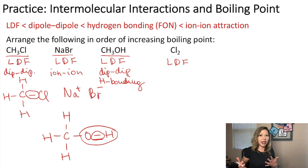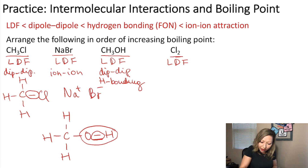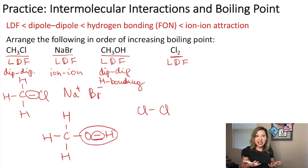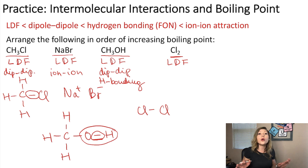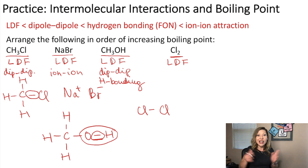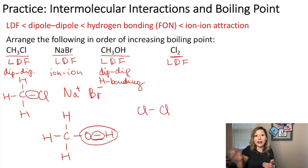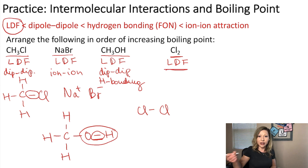Is there any other interaction — ion-to-ion attraction? No, because there are no ions. Now let's look at Cl₂: one bond between two chlorine atoms. Is there dipole-dipole interaction? No, because Cl₂ is a non-polar covalent compound, so it has only London dispersion forces. So which compound has the lowest boiling point? The one that only has London dispersion forces — Cl₂.